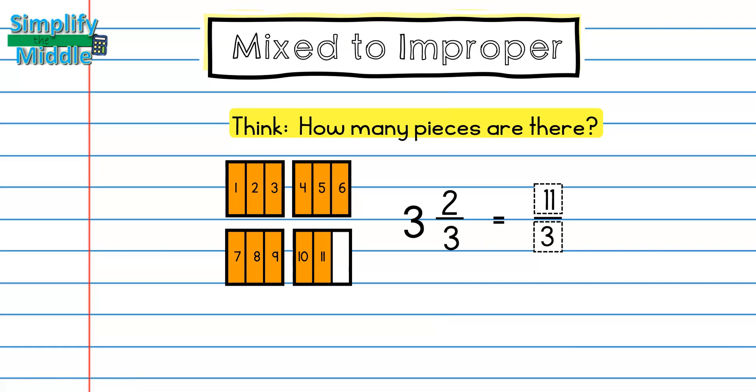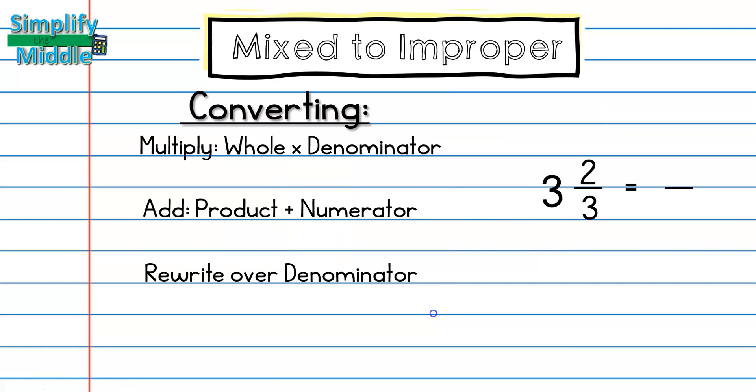So let's look at how to do this using just numbers with no pictures. For converting a mixed number to an improper fraction, I am going to multiply the whole number and the denominator. And that's essentially saying three times three is nine. That's essentially saying I have three full containers with three pieces each, which is nine pieces. Then I'm going to add the product that I just got with the numerator.